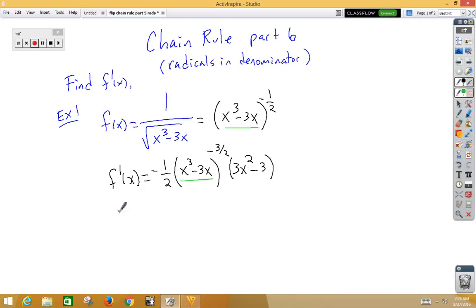I can do a little bit of cleanup here. f prime of x is equal to... Let's put the 3x squared minus 3 on the top. Let's keep the 2 on the bottom. I have a negative I need to bring down, so let's make that negative. And let's rewrite the inside part here.